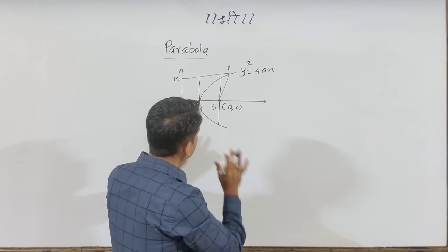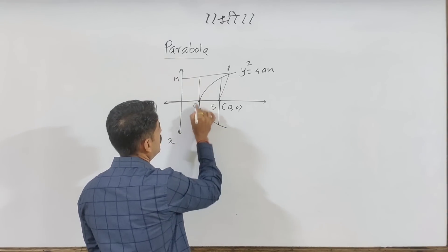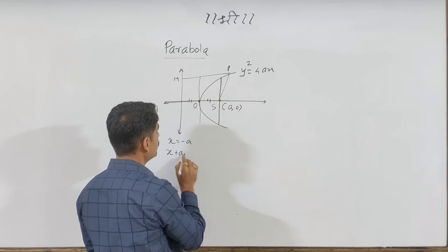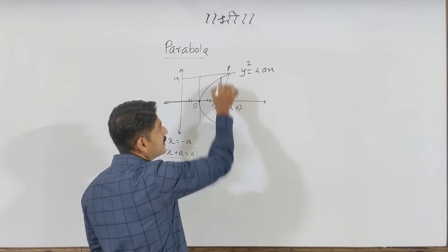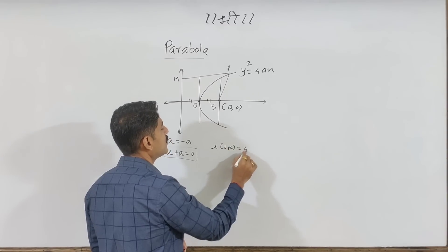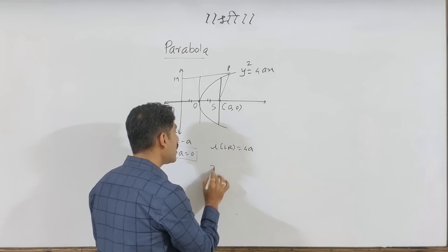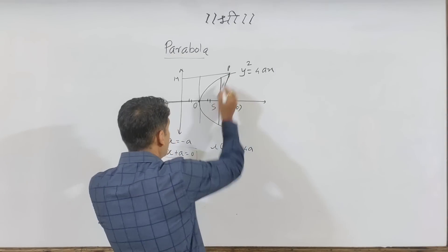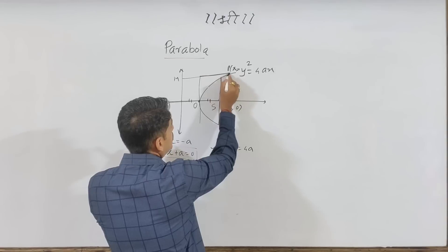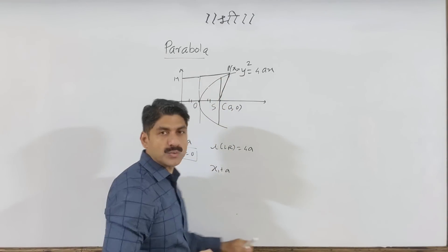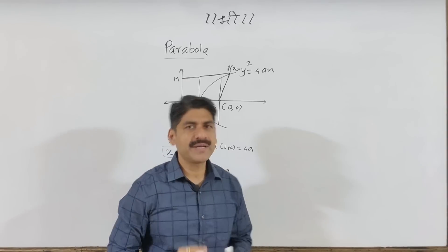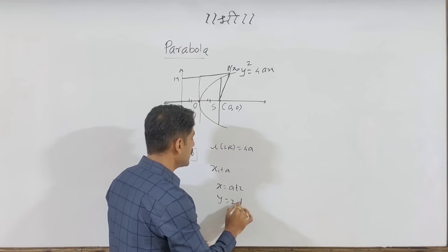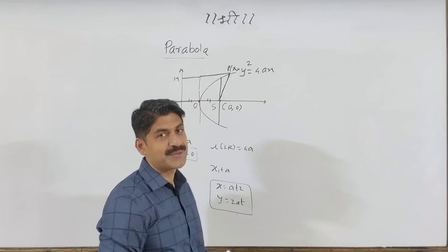The formula is the same. The directrix equation is x equals to minus a, so x plus a equals to 0. The length of the latus rectum is 4a. The focal distance: if the point is (x1, y1), the focal distance equals x1 plus a. The parametric equations are x equals to at squared and y equals to 2at — those are the important parametric equations.